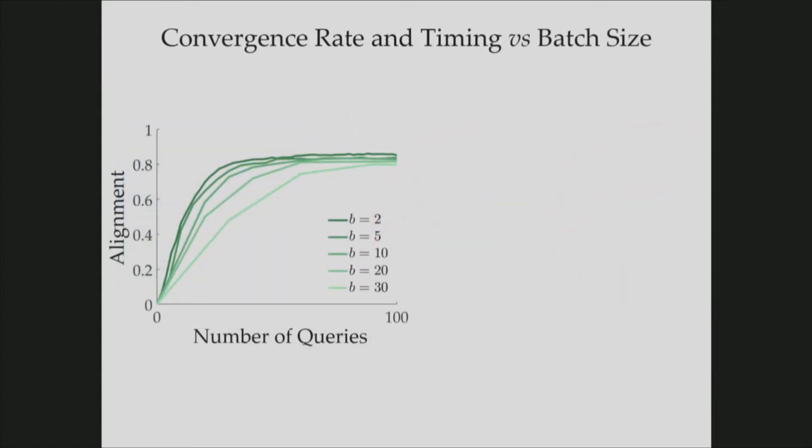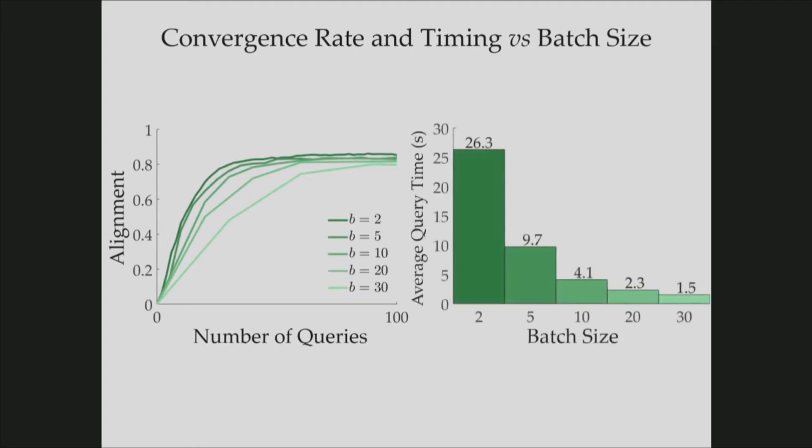So you might wonder what's the trade-off between the batch size and query generation time. As you can see in this plot, smaller batches yield faster convergence with the number of queries, but they also require higher query generation times. This means one can select a specific batch size to have a convergence rate which respects the number of queries, and it can still be a reasonable query generation time.